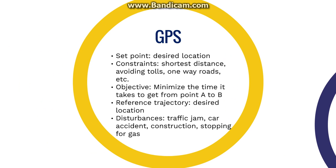An everyday example of model predictive control is in a global positioning system or GPS. A GPS takes the desired location or set point and predicts a desired route or reference trajectory based on some set of constraints. These constraints can include shortest distance, shortest time, least amount of tolls, or others. The objective function is then to proceed to the set point while minimizing the required travel time and meeting all the constraints.